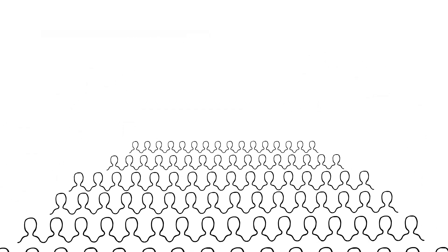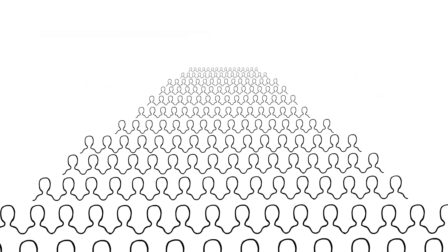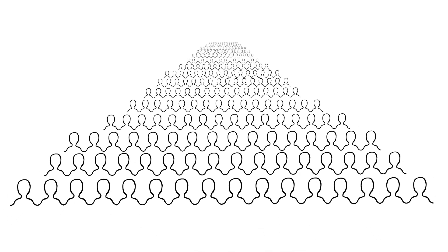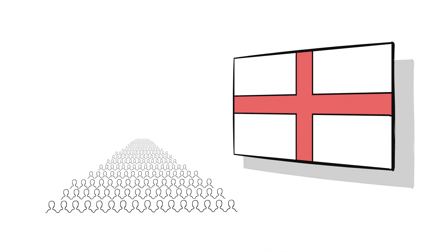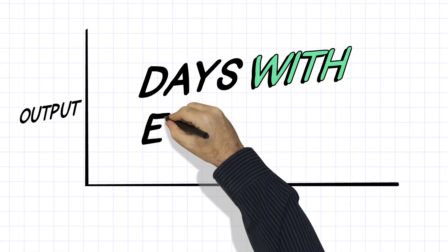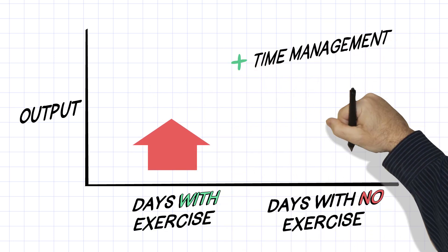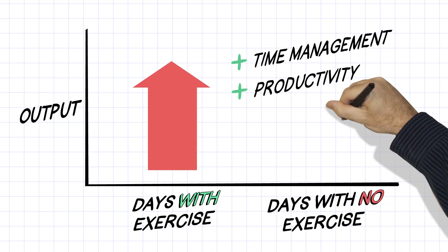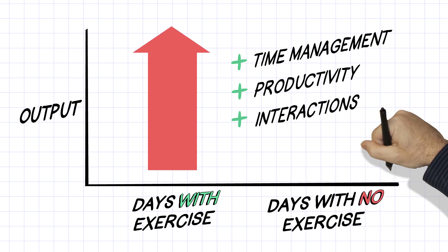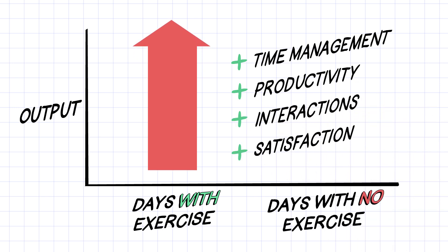Now, this is an emerging area of study, mostly self-report data. So, for example, one study looking at 200 employees of three different companies in the southwest of England compared the workers' output on days they exercise versus not. And on days they were more active, they reported managing their time better, being more productive, having better interactions with colleagues, and more satisfaction at the end of the day.